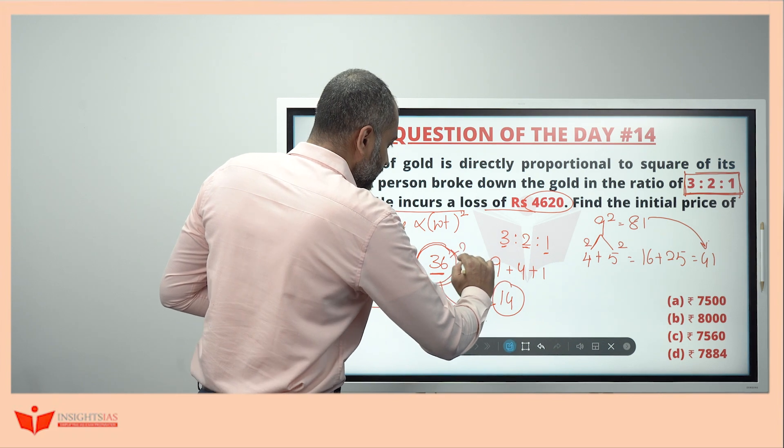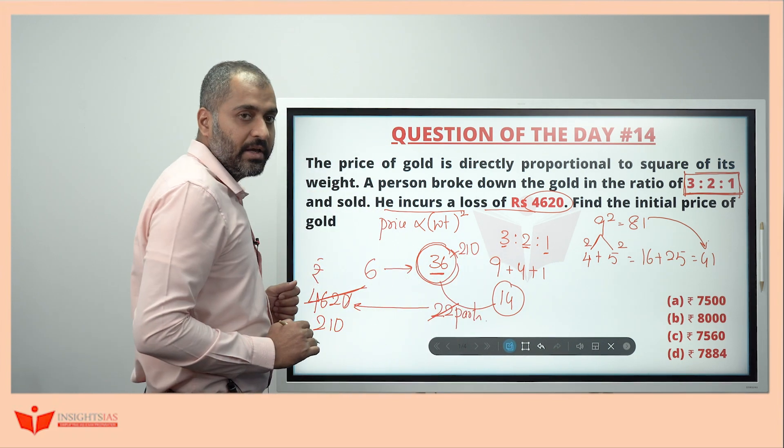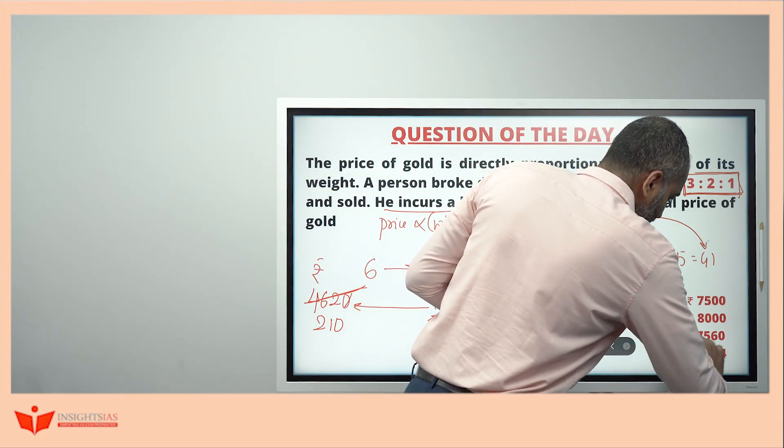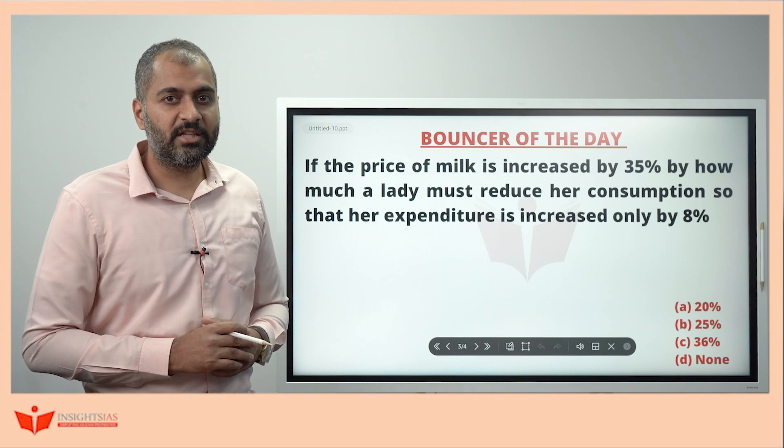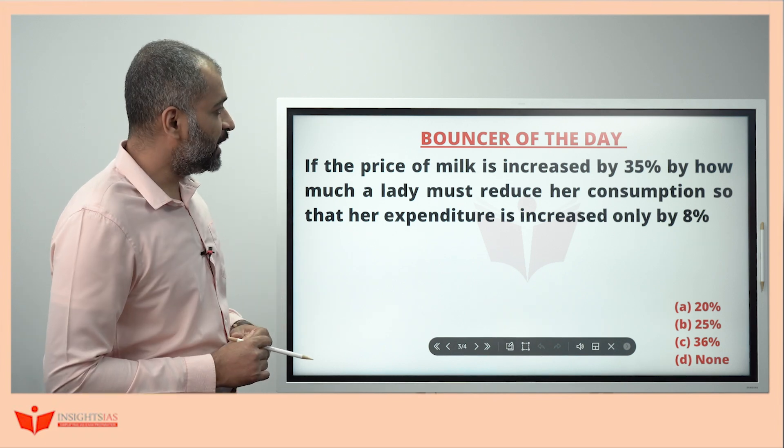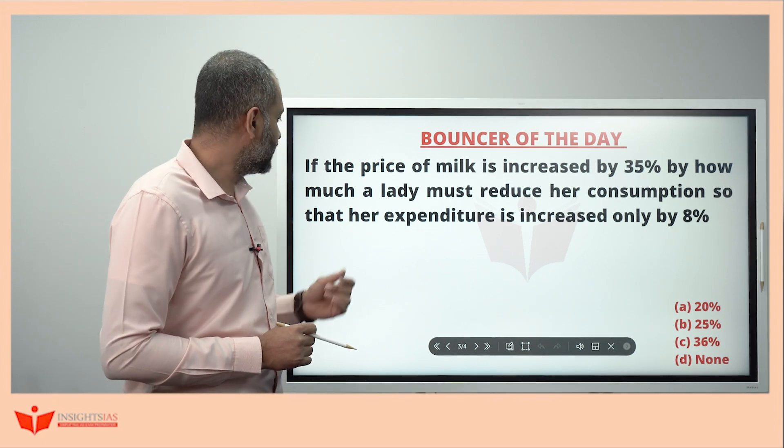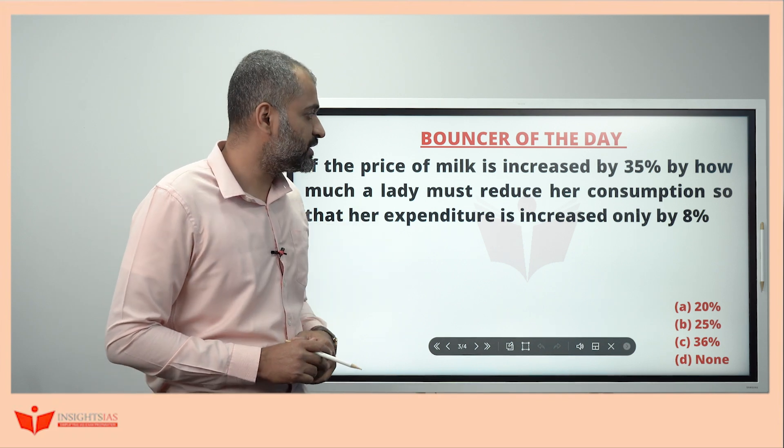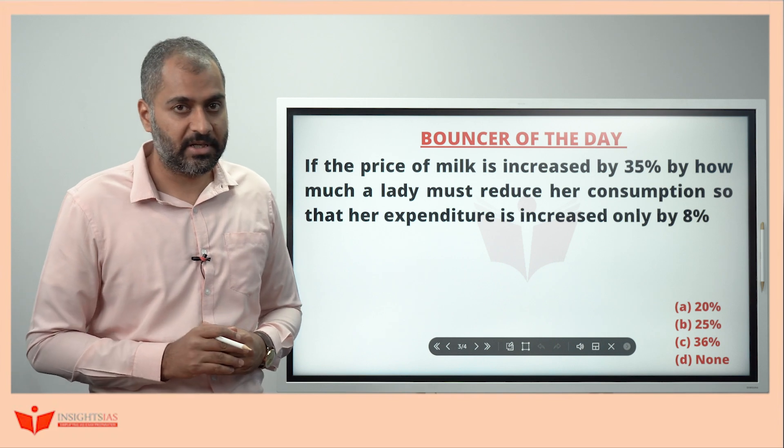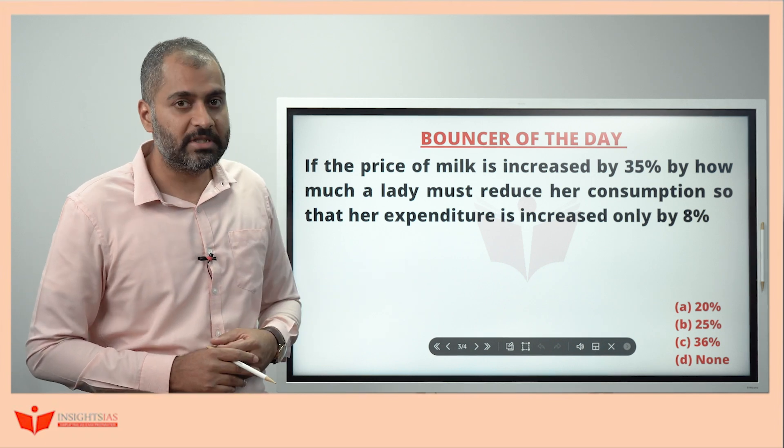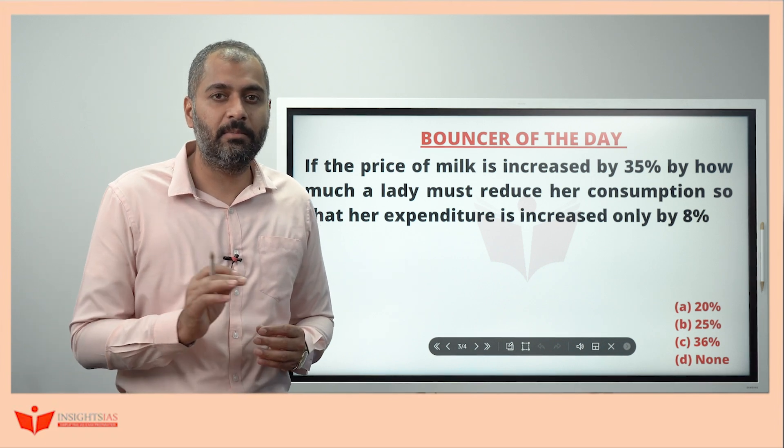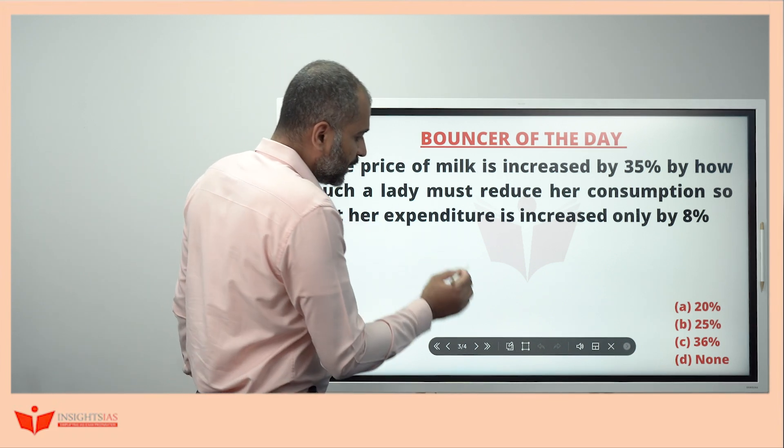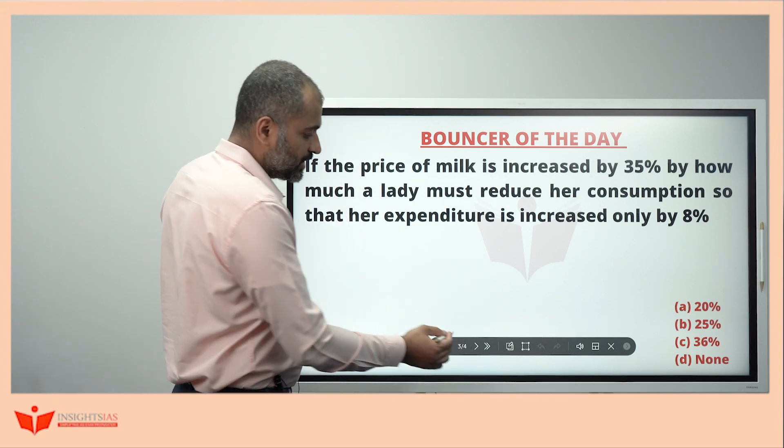So 36 into 210, it's nothing but 36 times 720 plus 36, that is 7560. This is the yesterday's bonzer question now. Price of milk is increased by 35%. By how much a lady must reduce her consumption so that her expenditure is increased only by 8%.